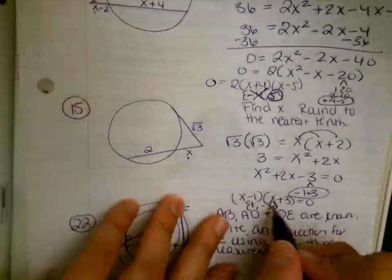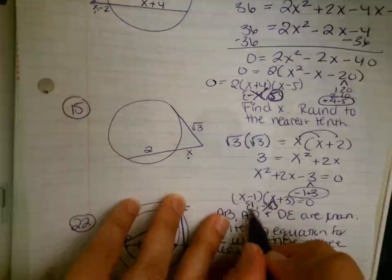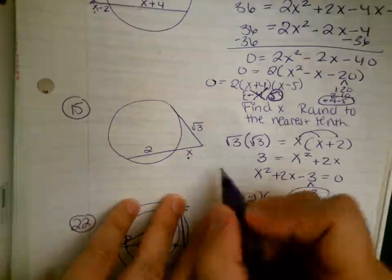Can we have a negative length? Once again, no, we cannot. That is extraneous, leaving our one and only answer as 1. So our answer is 1.